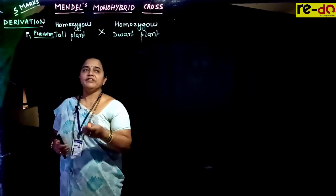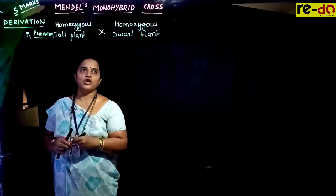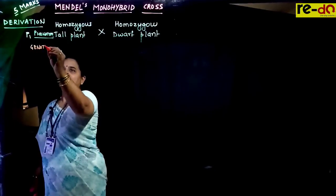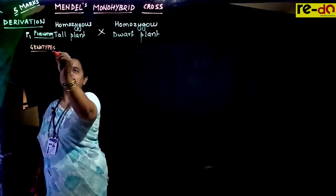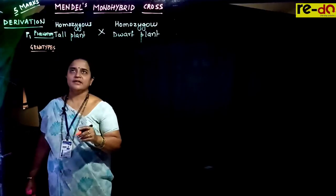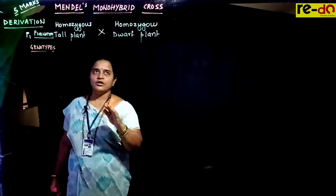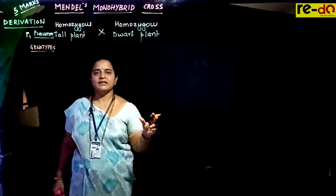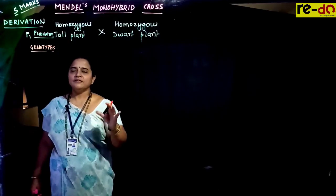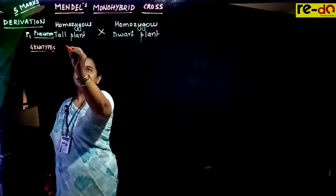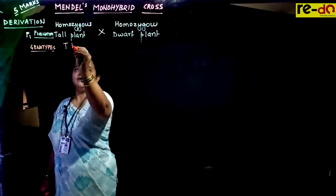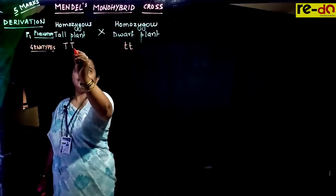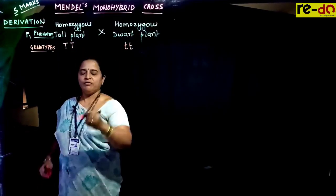For specific phenotypes — tall and dwarf — we need to write genotypes using alphabets. Mendel already proved that tall is dominant over dwarf. So tall is represented by capital T and dwarf by small t. As we are specifying the diploid (2n) condition, it is necessary to write a pair: TT for tallness and tt for dwarfness.